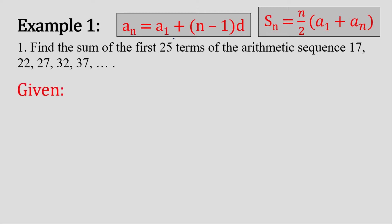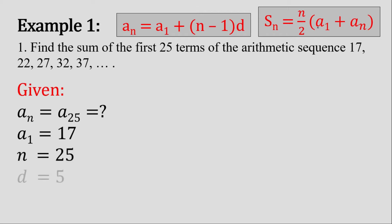Now let's write the given. Our first given is a sub n, which is a sub 25. We don't have the value of a sub 25 yet, so we'll put a question mark on that. A sub 1 is 17. Since this is our arithmetic sequence, we have a common difference of 5, which we get by subtracting 17 from 22, 22 from 27, 27 from 32, and so on.